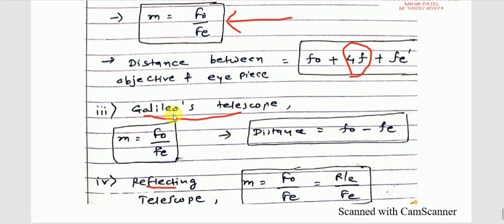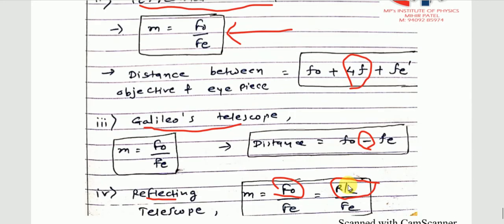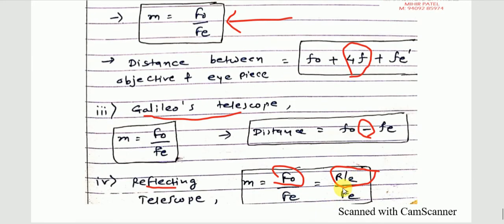The last two formulas: for Galileo's telescope, magnification is fo/fe, but in the distance formula a minus sign appears. For the reflecting telescope, magnification is (R/2)/fe, where the value of fo is taken as R/2. Recall these relative formula points carefully.